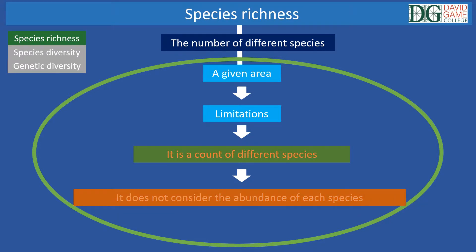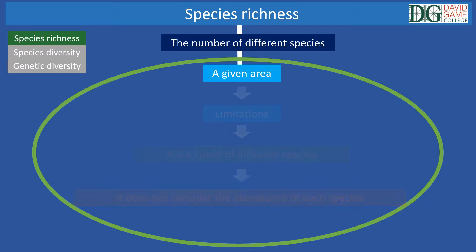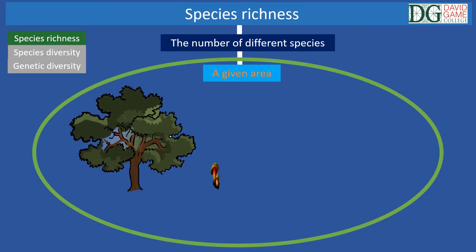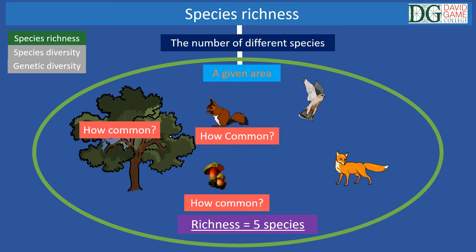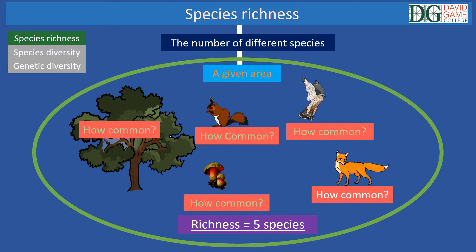Let's see an example. In order to facilitate understanding, I have simplified the concepts and graphics. Imagine that in a specific area there are oak trees, fungi, squirrels, falcons, and foxes. This indicates the richness in this specific area — i.e. five species. However, it does not indicate how common each species is; it can be one or a thousand.